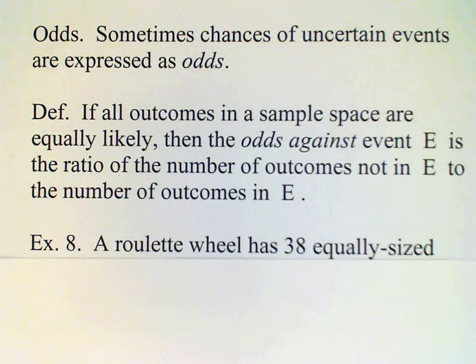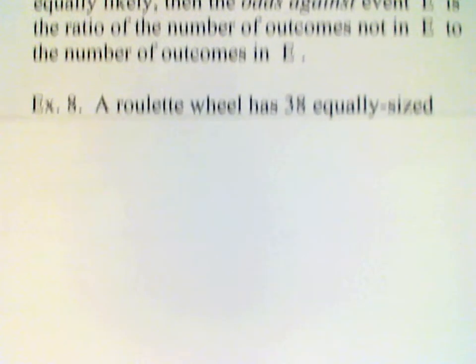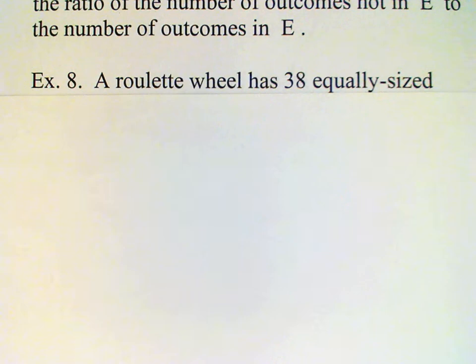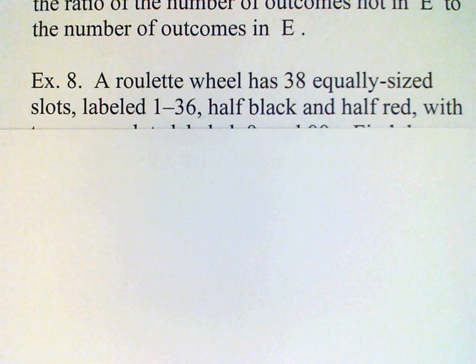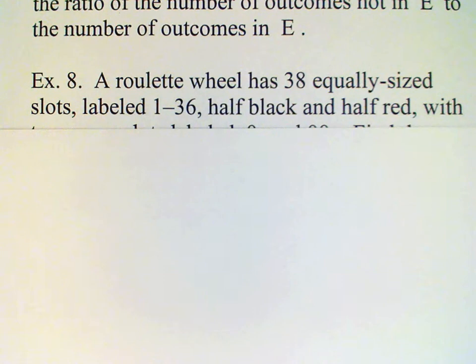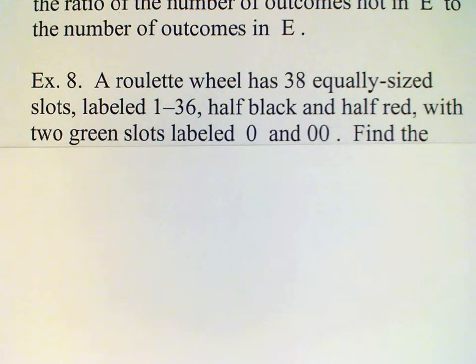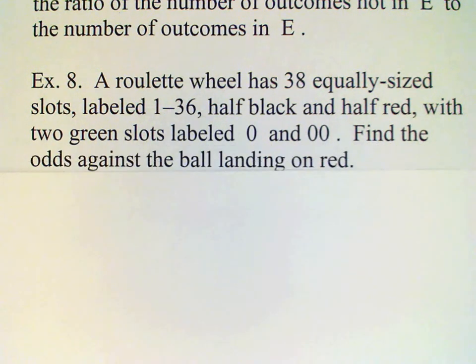For example, we have a roulette wheel with 38 equally sized slots. 36 of these are labeled 1 through 36 — half of those are black and half red, so there are 18 black and 18 red. There are also two green slots labeled 0 and 00, which are for the house. We want to find the odds against the ball landing on red.